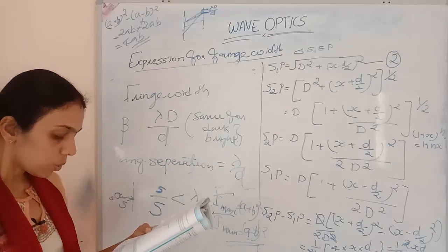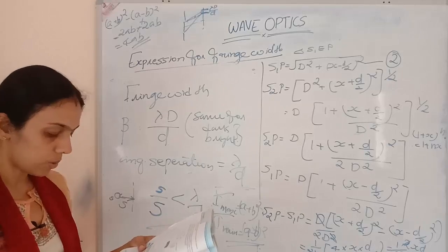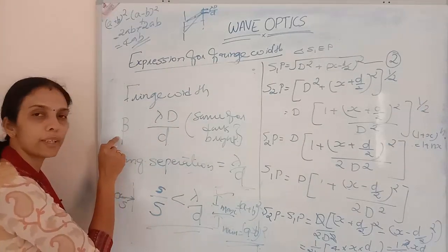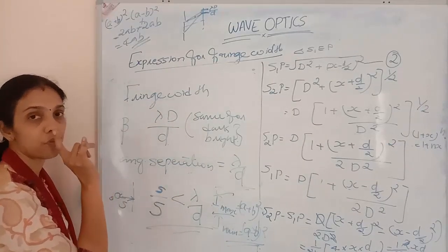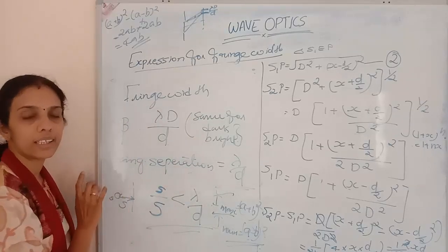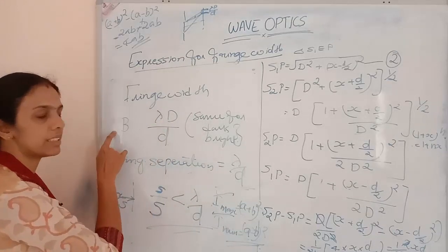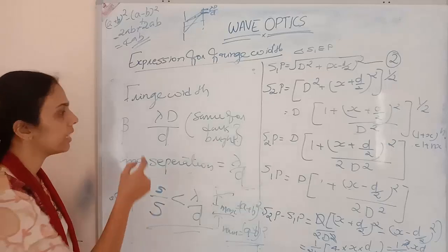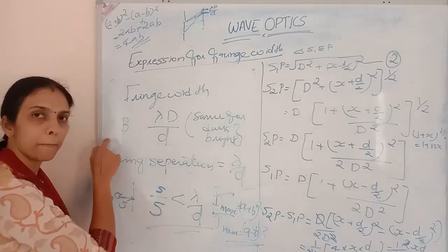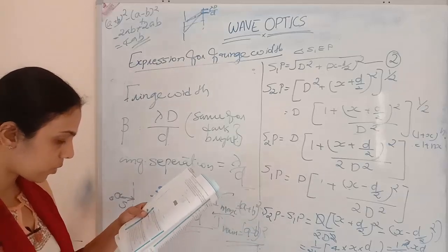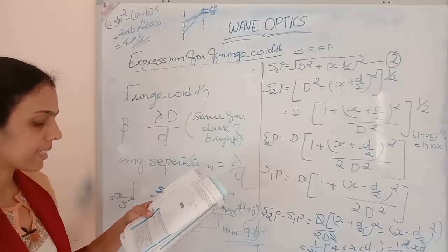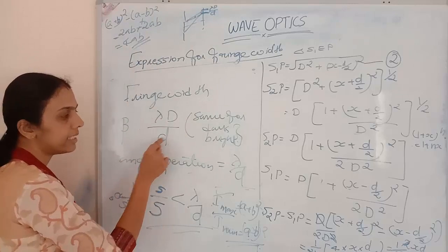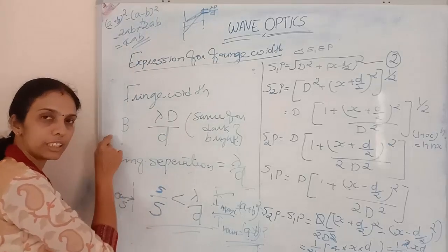Second, if the source is replaced by one of shorter wavelength, λ decreases so β also decreases — the fringe width gets smaller. If wavelength is increased, β increases. Third, if the separation between the two slits is increased, small d increases, so β decreases — the size of each bright and dark fringe decreases.